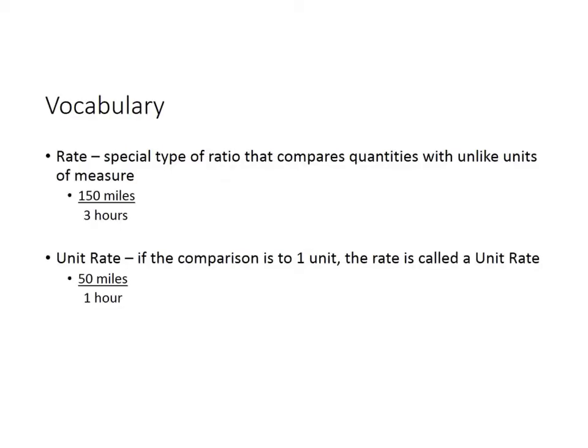Let's talk about some vocabulary to start with. The first vocabulary word is rate. A rate is a special type of ratio that compares quantities with unlike units of measure. For example, this rate has 150 miles for every 3 hours.